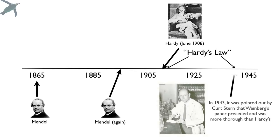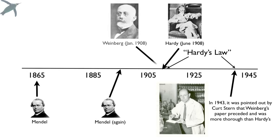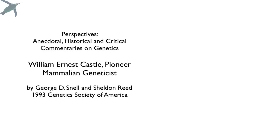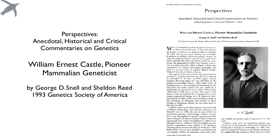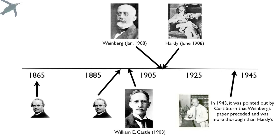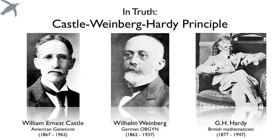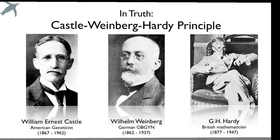It was all good until 1943, when it was discovered that somebody had beaten Hardy to the punch. A German physician named Weinberg had published a paper — more eloquent, more clear, and overall better — in January of 1908. So Hardy's Law became the Hardy-Weinberg principle. But it turns out somebody beat both of them: the American geneticist William Castle wrote about these principles in 1903. So in truth, this should be called the Castle-Weinberg-Hardy principle, but that's a mouthful.